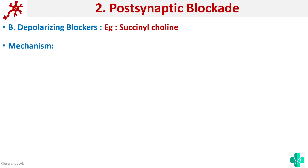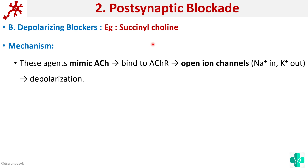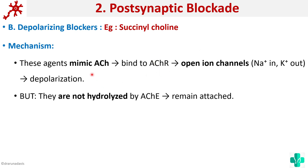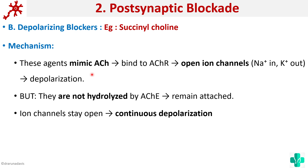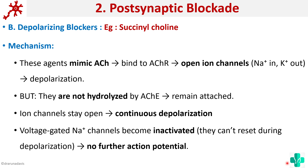A good example of a depolarizing blocker is succinylcholine. It mimics the action of acetylcholine — it binds to the acetylcholine receptor, opens the ion channels, and causes depolarization. But it is not hydrolyzed by acetylcholinesterase, so it remains attached and causes continuous stimulation of voltage-gated sodium channels and continuous depolarization. But then it will quickly be inactivated, so there will not be any further action potential, and thus it causes flaccid paralysis.